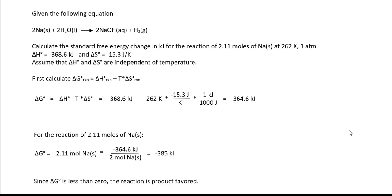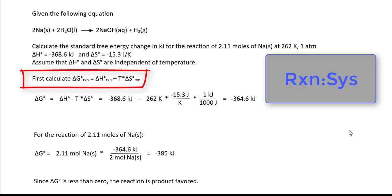We're going to use the free energy equation: delta G reaction equals delta H reaction minus T delta S reaction. Sometimes the reaction is called the system, and I mentioned that in a previous video. I just want to remind you of that.